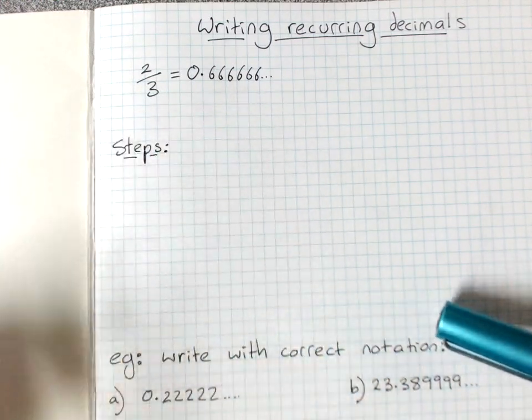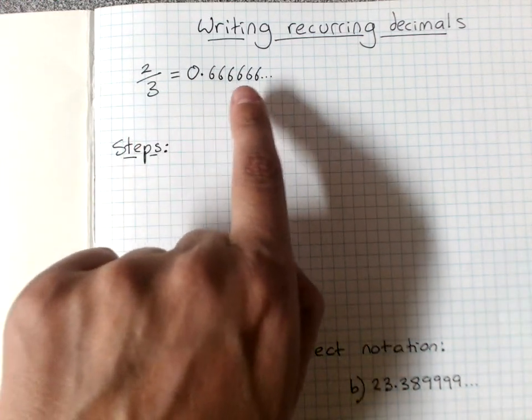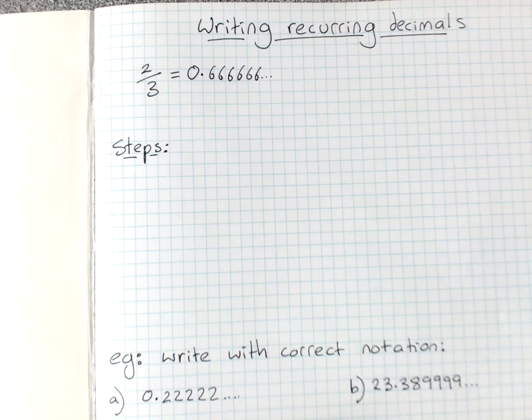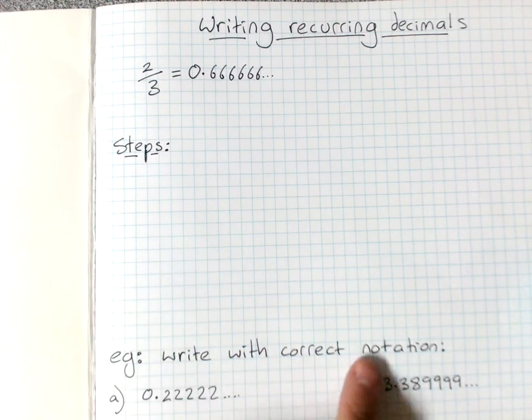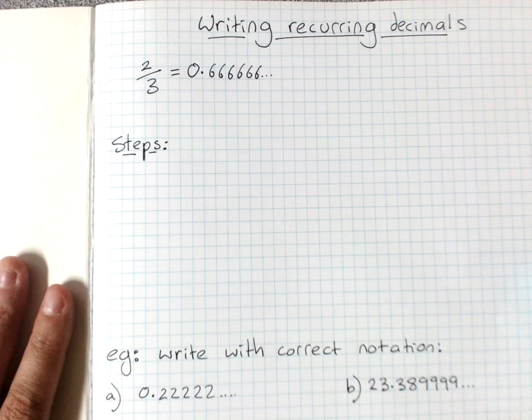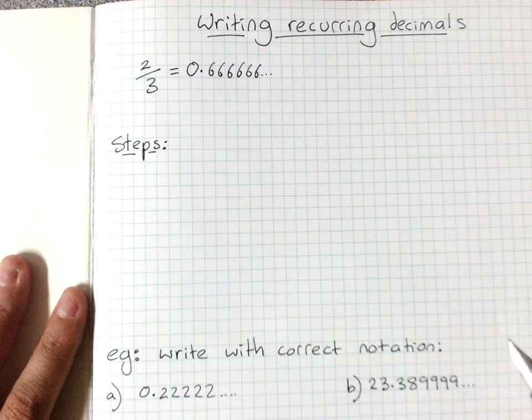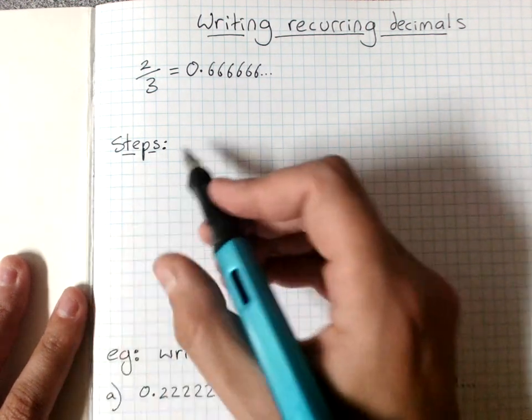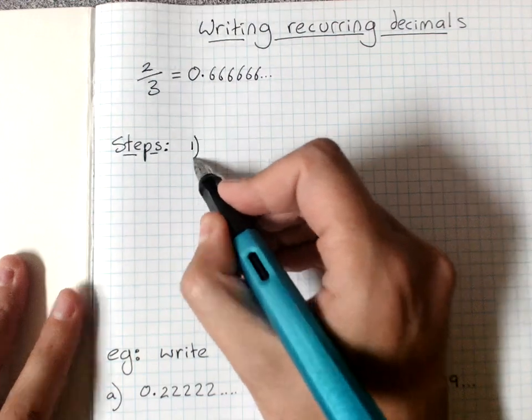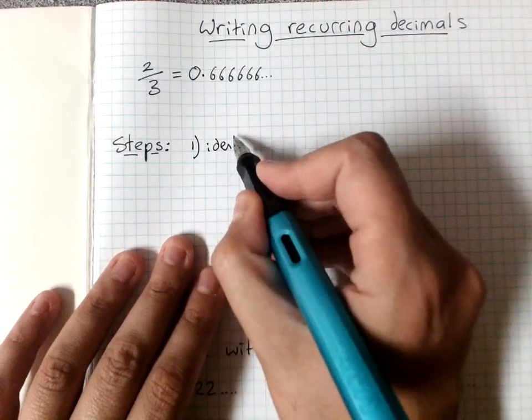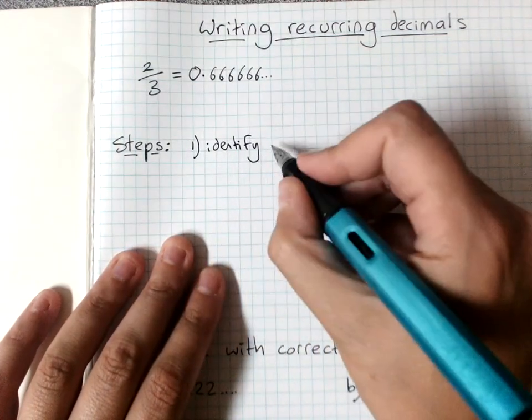It's not actually very convenient to write lots and lots of 6s and then three dots. So there's a notation, a way of writing things, that we need to learn. And it's the correct way to write recurring decimals. So your steps are, first you identify the repeating pattern.